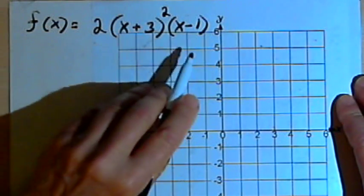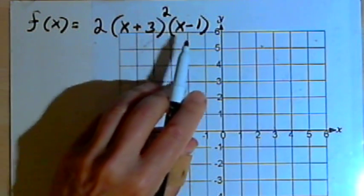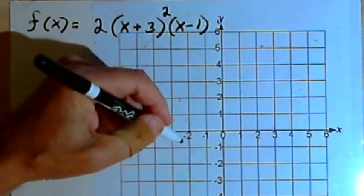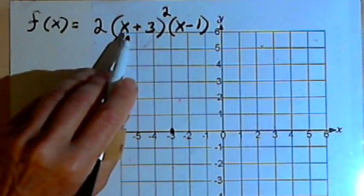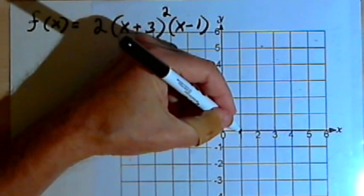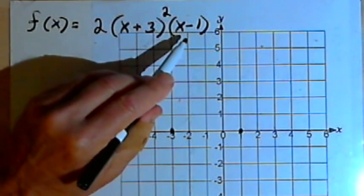Let's say we want to graph this. We just want to do a rough graph of it. Well, looking at it, we know we're going to have zeros at x equals negative 3, that's because one of the factors is x plus 3, and at x equals positive 1, because I've got a factor of x minus 1.